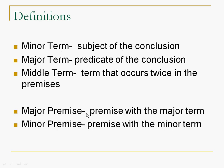First, in terms of definitions, let's remember that the minor term is the subject of the conclusion. The major term is the predicate of the conclusion. And the middle term is the term that occurs twice in the premises. Each term is going to occur twice throughout the syllogism. So the minor term will occur in the conclusion and in the minor premise. The major term will occur in the conclusion and in the major premise. And the middle term will occur in both the major and the minor premise.